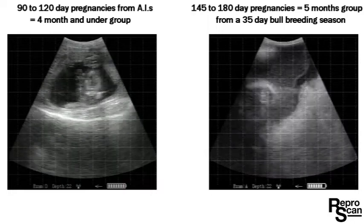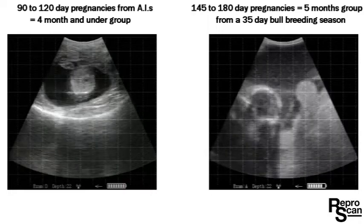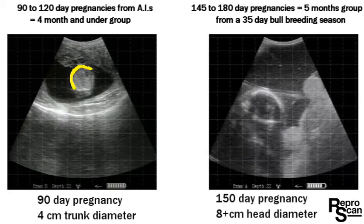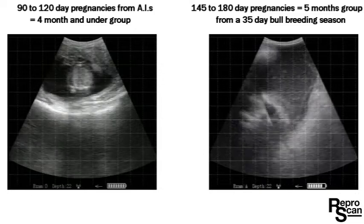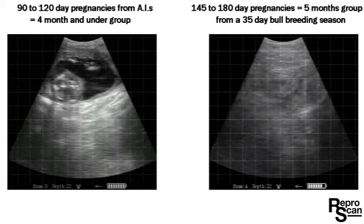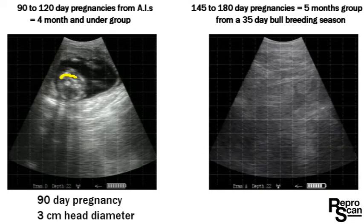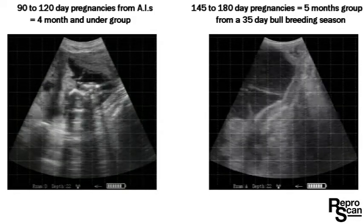Now we're going to start to slow this down. There we froze it, outlining the trunk on a 90 day pregnancy. Over there, this is the head on a five month pregnancy — eight centimeter diameter. And there we're outlining the head diameter: three centimeters, one and a half squares, on a 90 day pregnancy.